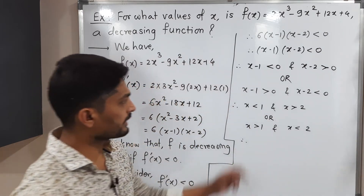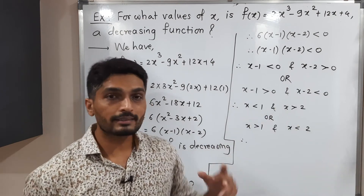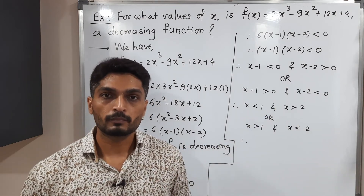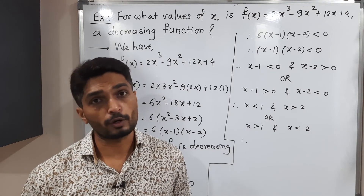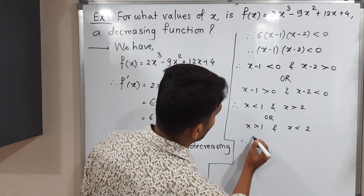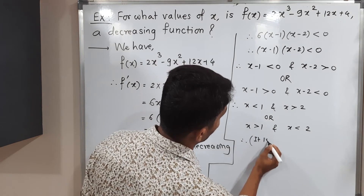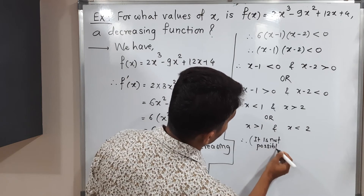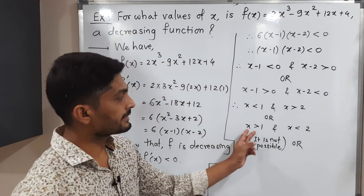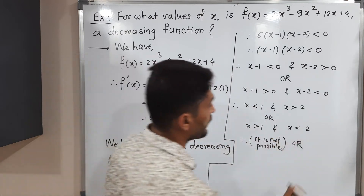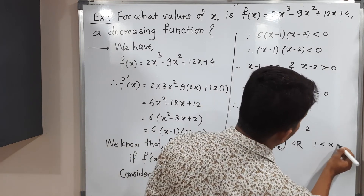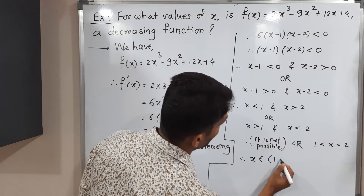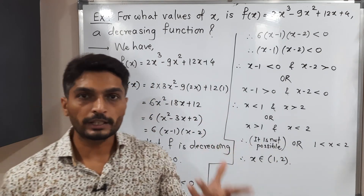So from the first case: x < 1 and x > 2. Can you find one number which is less than 1 and greater than 2? That is not possible, so the first case is not possible. For the second case: x > 1 and x < 2, which means 1 < x < 2. Therefore x lies in the interval (1, 2).